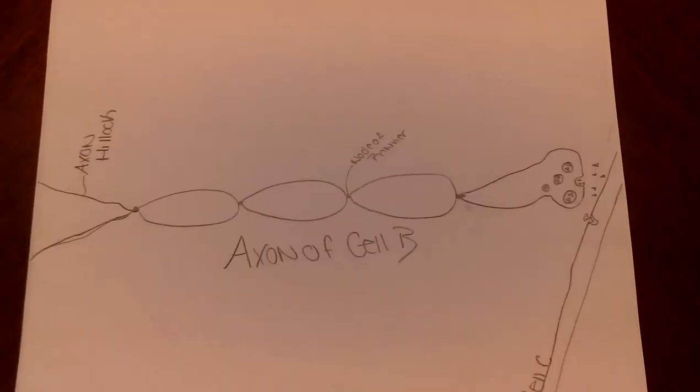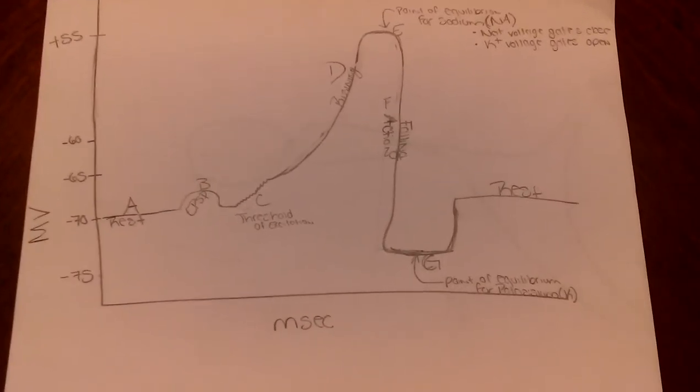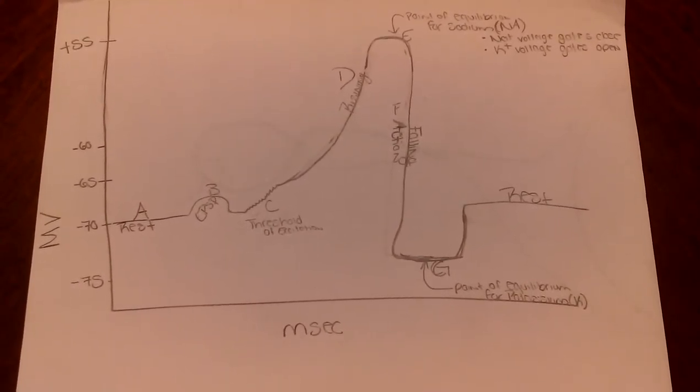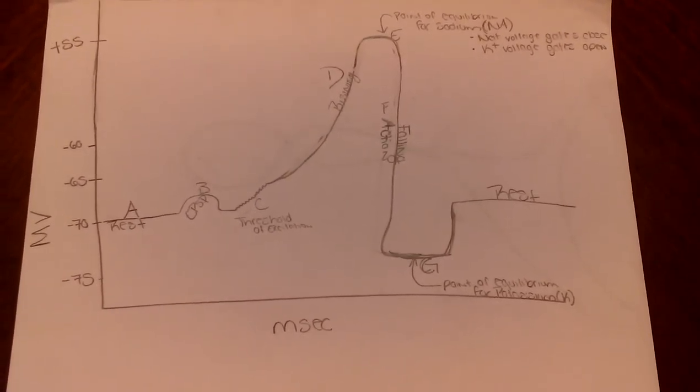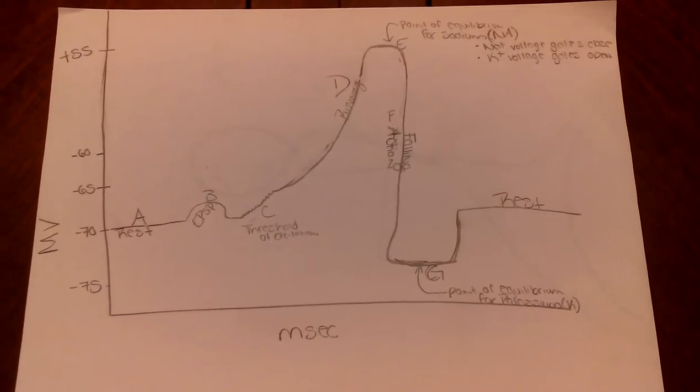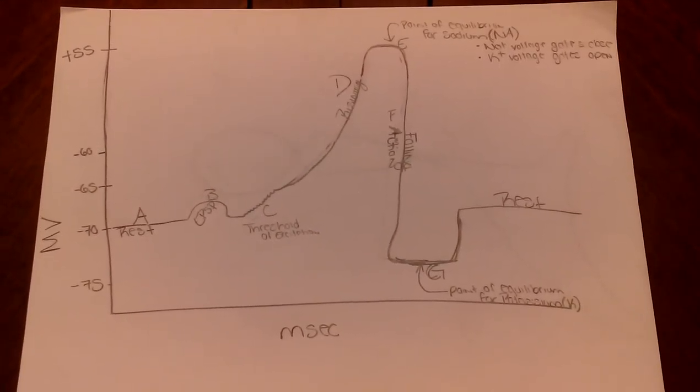These charges, which take place at the axon hillock of cell B, reach negative 65 millivolts. This is called the threshold of excitation. The threshold of excitation is necessary to open the voltage-gated channels and to begin the action potential.